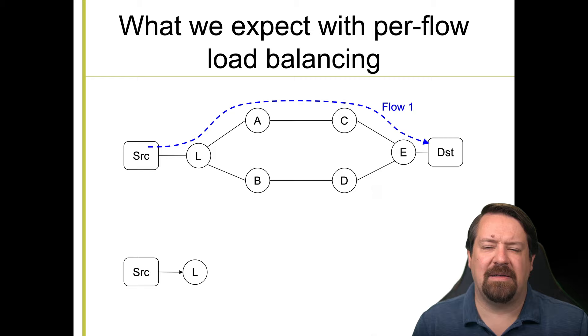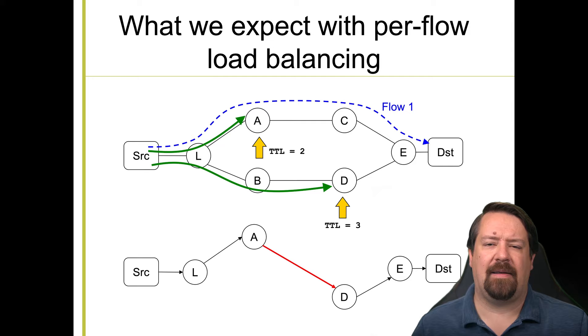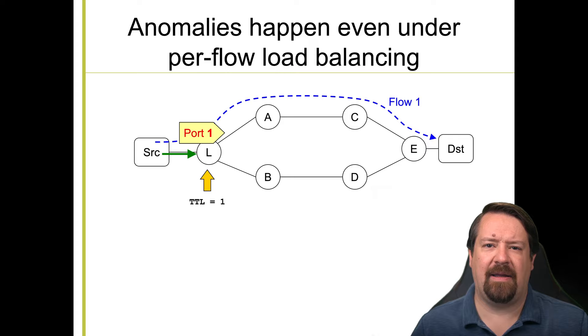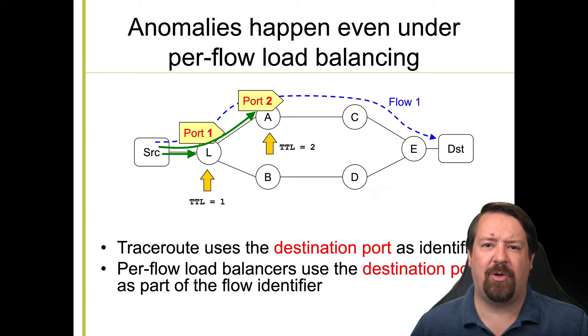We might think that per flow load balancing would keep our packets on the same legs, so we wouldn't infer these false links. However, this is not the case. Even though a TCP flow would be routed over the same leg, the traceroute application uses port numbers to provide sequencing. So it's changing the port number with each probe it sends out for a new TTL. And this means that subsequent probes in the same traceroute don't actually belong to the same flow from the load balancer's perspective, because all the packets in a given flow are supposed to have the same port numbers. So per flow load balancing doesn't help our traceroute problem. But this description does give us some insight into how we might fix this.